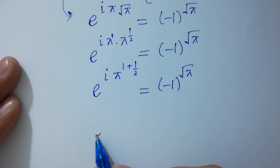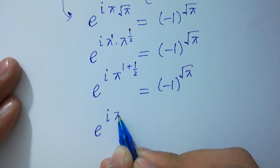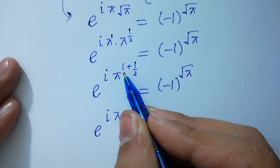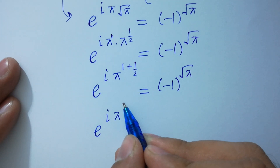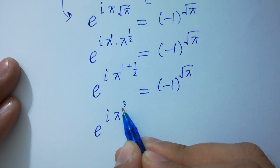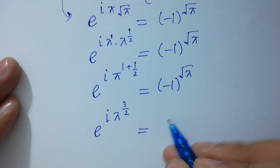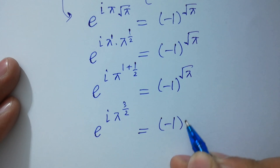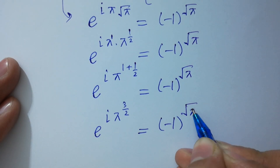e to the power i*pi, where the exponent combines to give i*pi^(3/2), equals minus 1 to the power square root of pi.